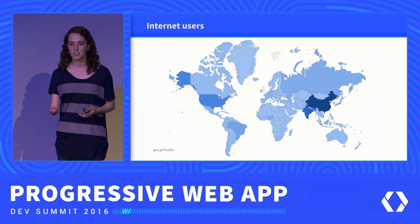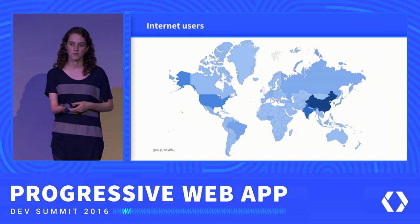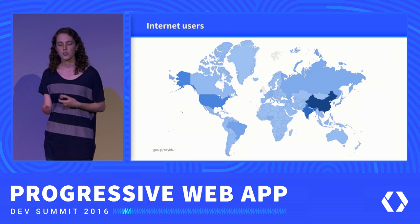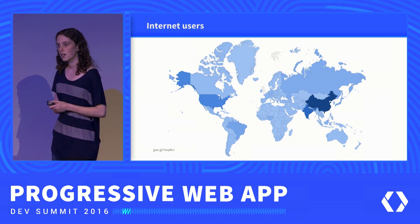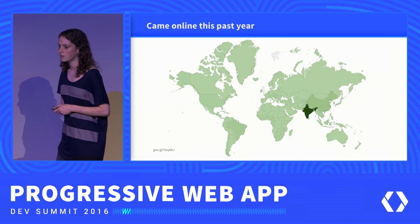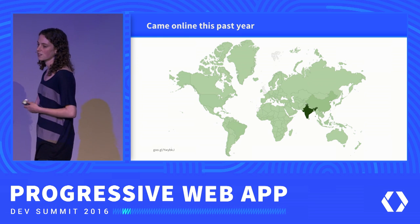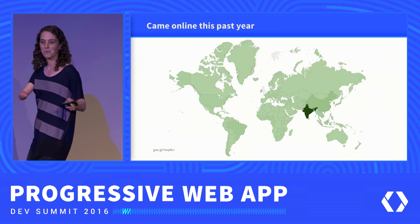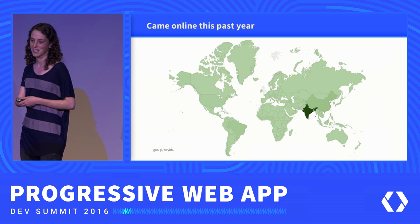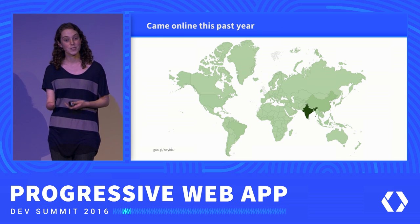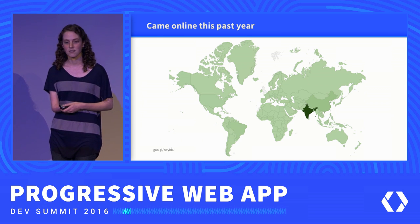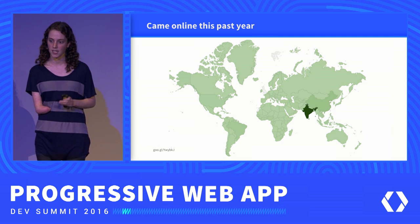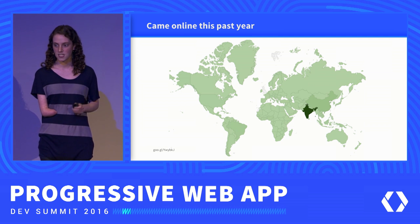What's really striking here is not just where the internet users are today, but looking at where the growth is coming from. If you look at a snapshot over the last year, you'll see that a lot of internet users came online in one very specific country — and this is India. We saw over the last year that 108 million users came online in India alone.